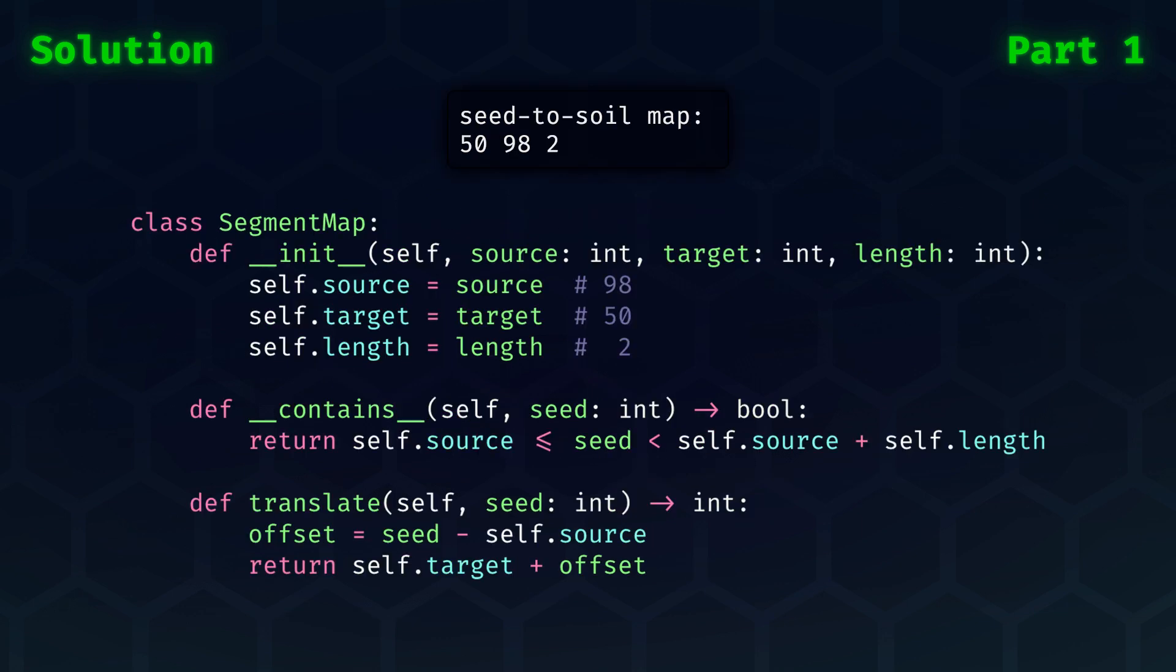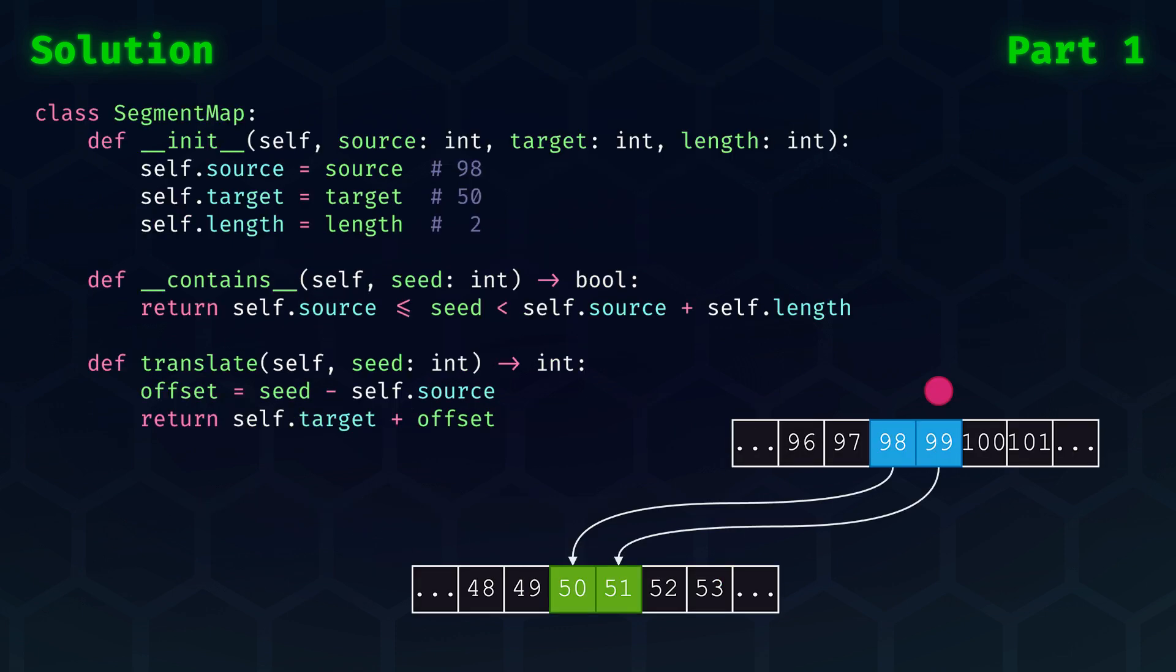A key element to this solution is the use of a segment map, which simply represents one of the map entries in the instructions. I opted to make this a class which stores the three values and offers two nice utility functions. Firstly, the contains function allows us to check if a seed is in the range or not. It is simply checking if the seed, or position, is in between the start and end point of the source range, which in this specific instance represents the seed range.